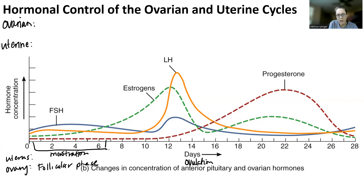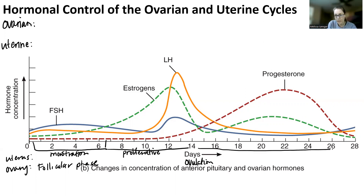From day seven to day 14 in the uterine stage, this is the proliferative phase. Then from day 14 to day 28 or so in the uterus, this becomes the secretory phase. And for the ovary, this is the luteal phase.